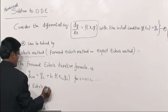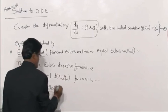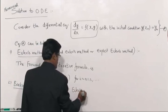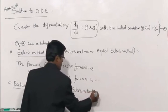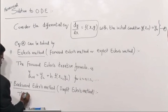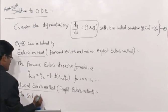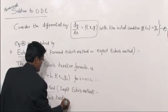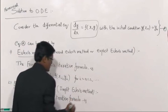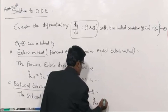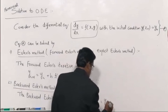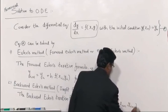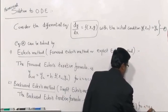Two — Backward Euler's method, also known as implicit Euler's method. The backward Euler iteration formula is: y_{i+1} = y_i + h · f(x_{i+1}, y_{i+1}), for i = 0, 1, 2, and so on.